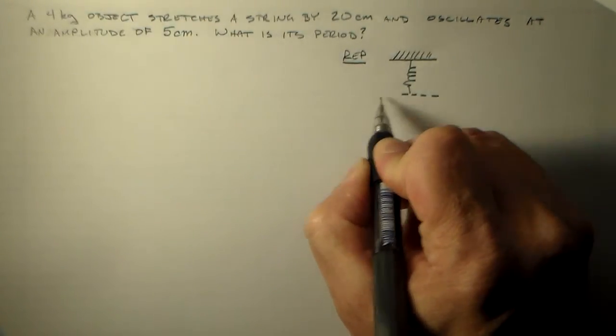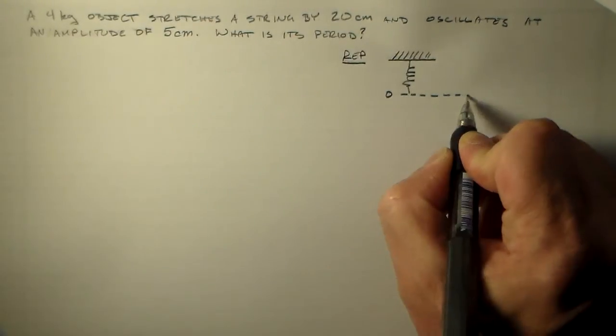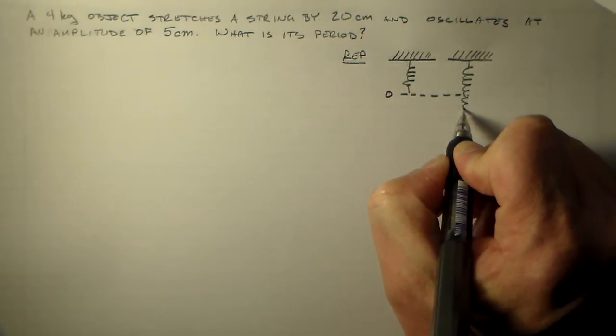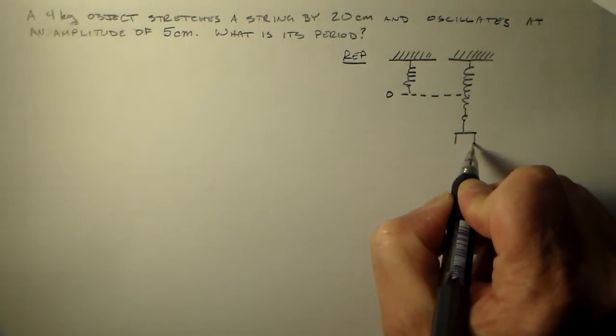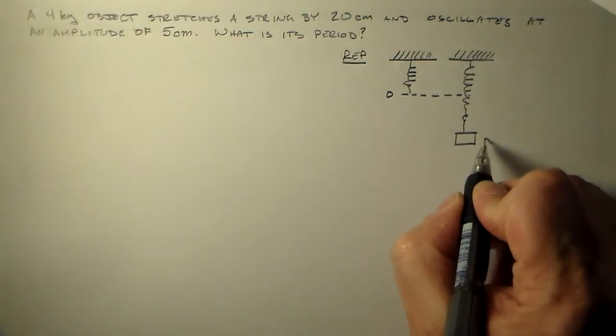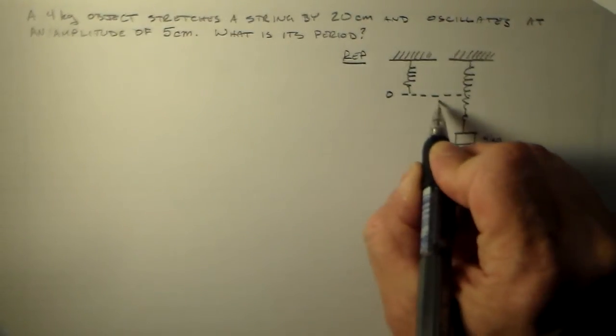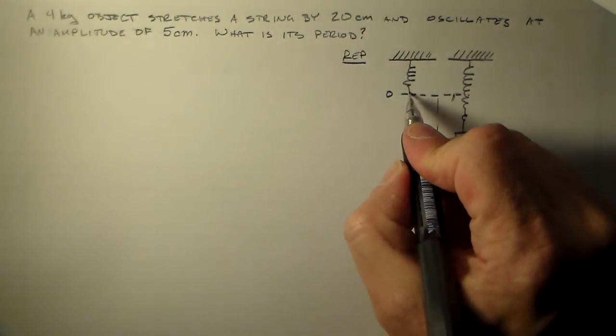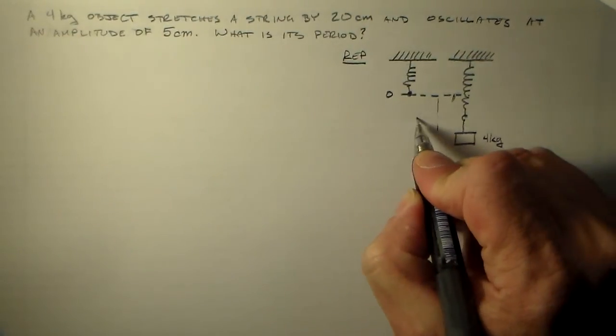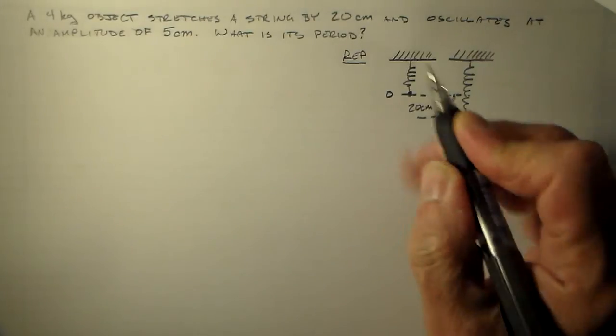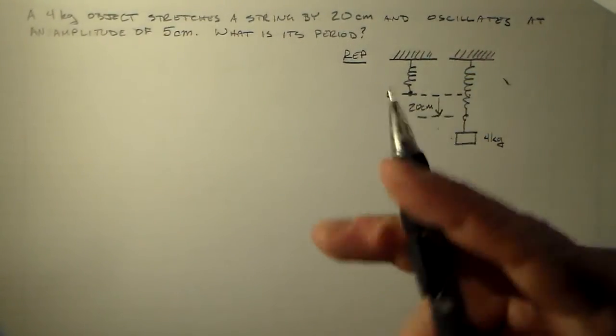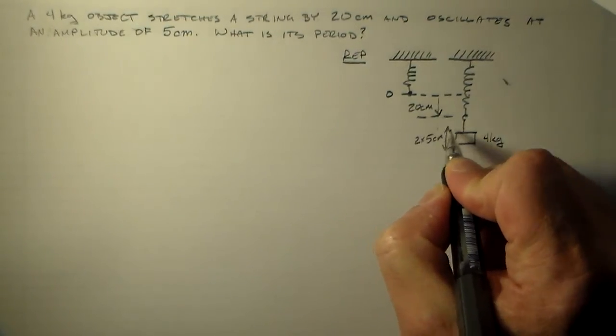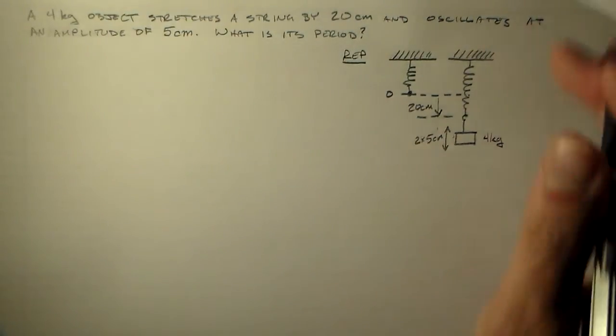And then I'm going to hook up a mass to it. So this is at one level, we'll call that zero. And then I'm going to hook up a mass to it, and it's going to come down here. And that mass is four kilograms. And that four kilogram stretches this. So it has to stretch down to the same spot. So if this is the place where the mass would hook at, right here, this is 20 centimeters. And then this thing oscillates with an amplitude of 5 centimeters. So this is 10 centimeters peak to peak.